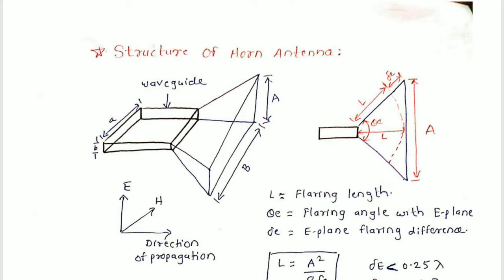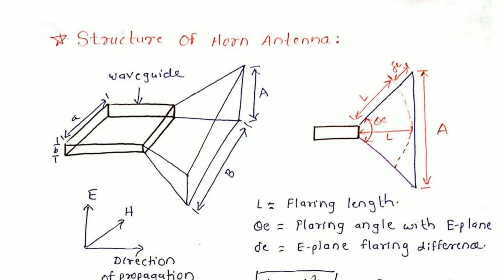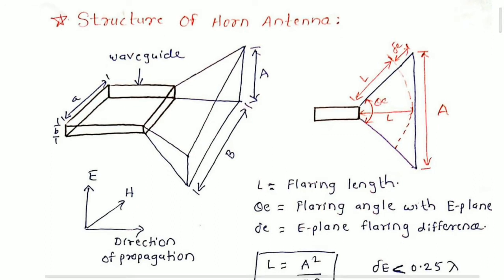In the diagram shown, there is a horn antenna I have drawn, and the right side diagram is the cross section of this horn antenna. I have drawn one waveguide and at the opening of the waveguide we have provided flaring. This is a pyramidal type of horn. The smaller dimensions are small a and the height of the waveguide is small b. The larger dimensions of the horn antenna flaring are: the vertical length is capital A and the horizontal length is capital B.